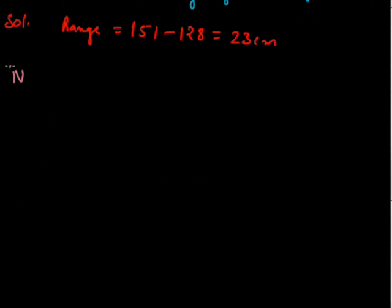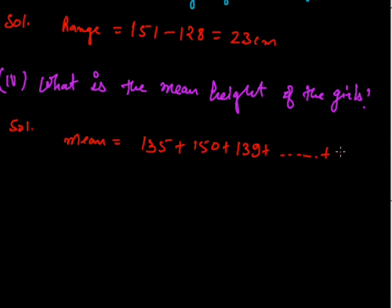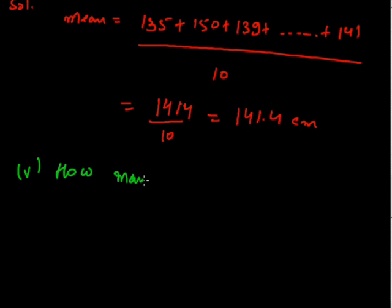Now the fourth part is what is the mean height of the girls. To take out the mean we have to find the sum of the observations divided by total number of observations. So mean will be 135 plus 150 plus 139 plus all the observations to 141, whole divided by 10 since we have 10 observations. The total of these observations comes to be 1414 divided by 10, which equals 141.4 centimeters.